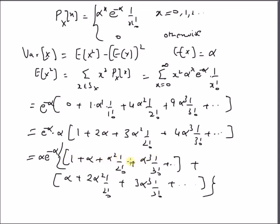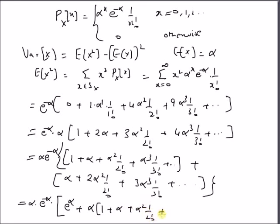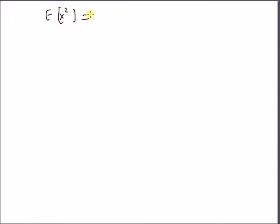The first sum is nothing but the Taylor series of the exponential function, giving alpha * e^(-alpha) * e^(alpha). The second series is also the Taylor series of the exponential function: 1 + alpha + alpha²/2! + alpha³/3! + and so on. So finally, the expectation of X² equals alpha * e^(-alpha) * e^(alpha) * (1 + alpha), which simplifies to alpha * (1 + alpha).